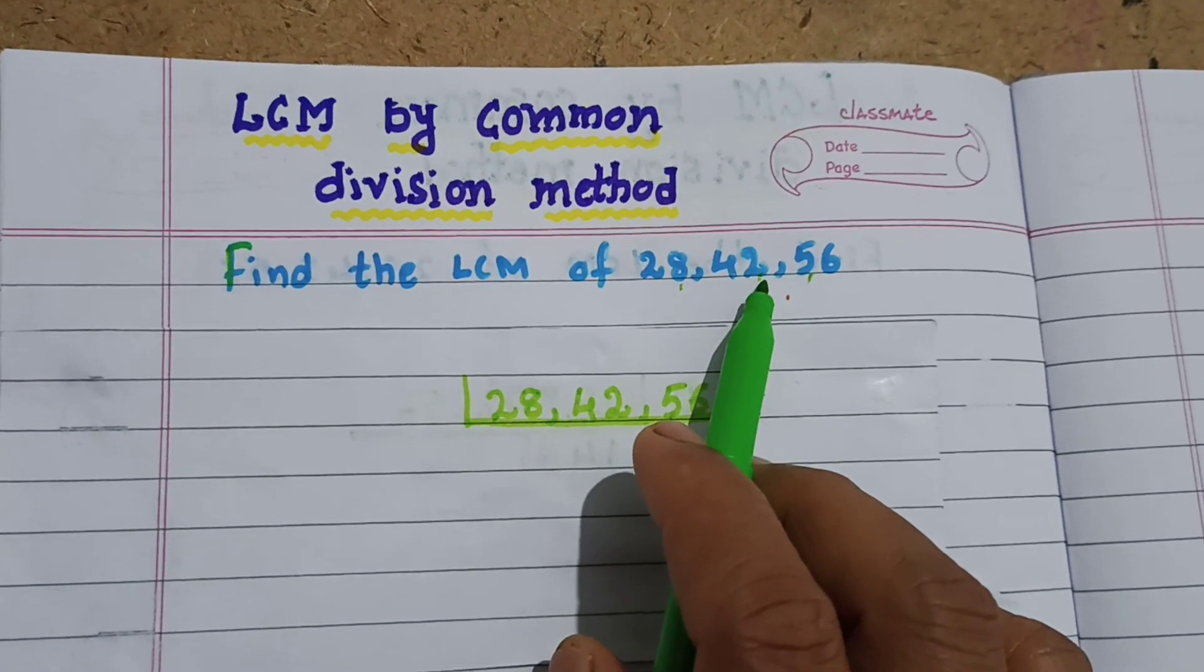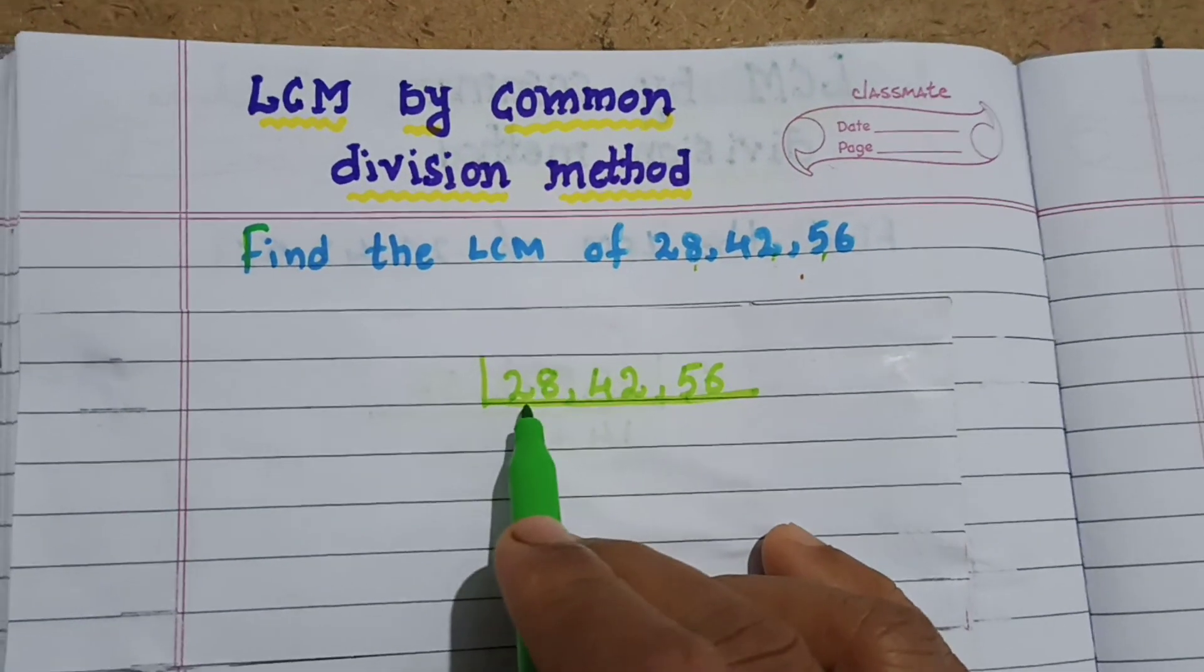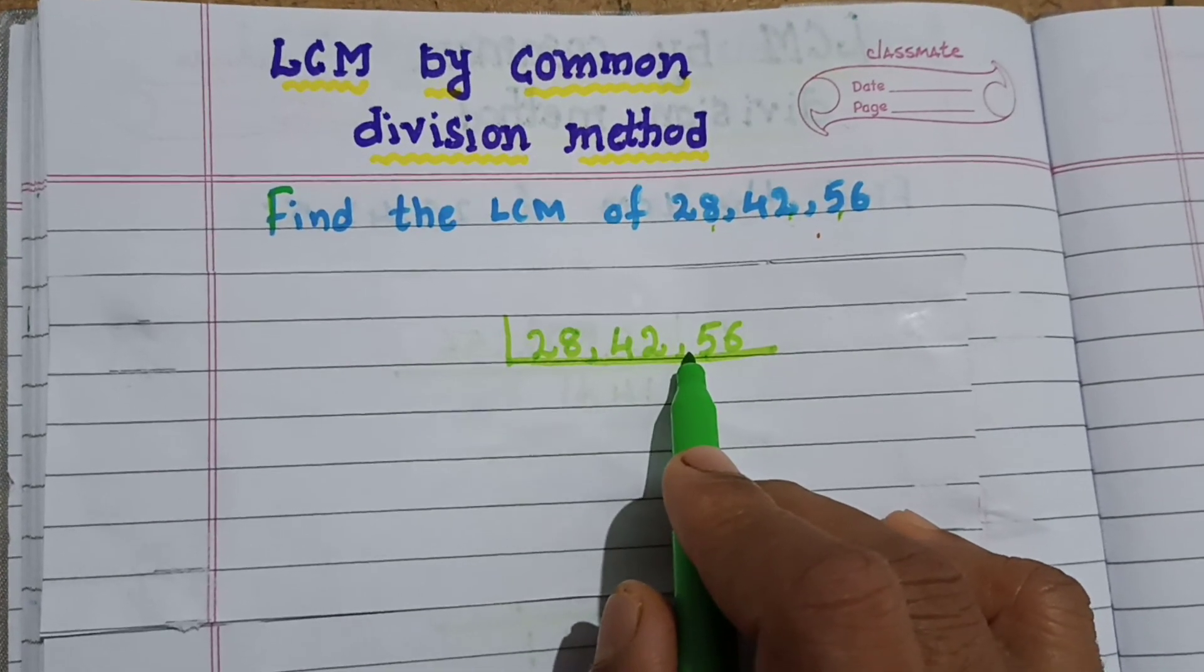To find the LCM of given numbers by common division method, first write the given numbers in L shape, separated by commas.